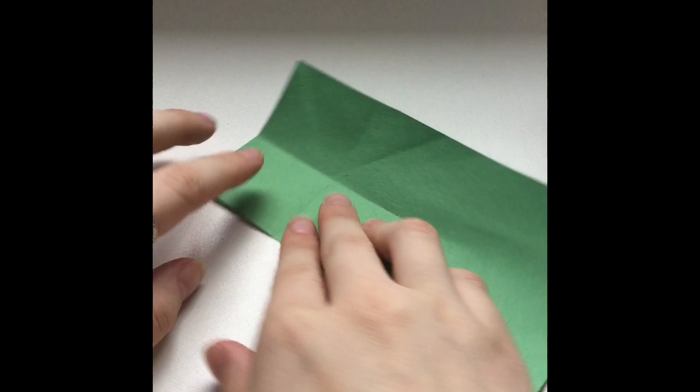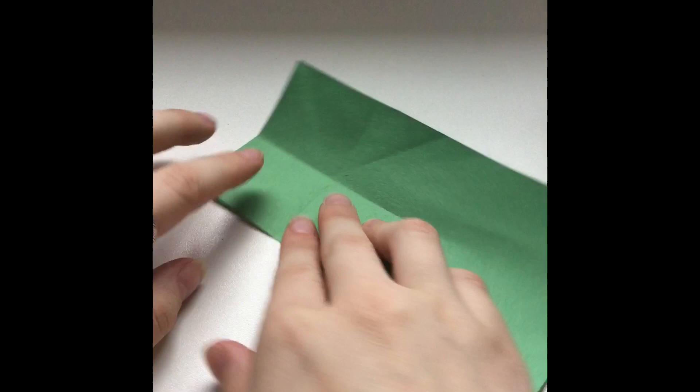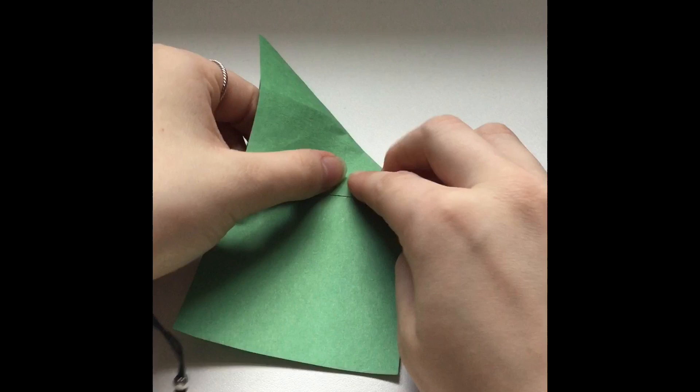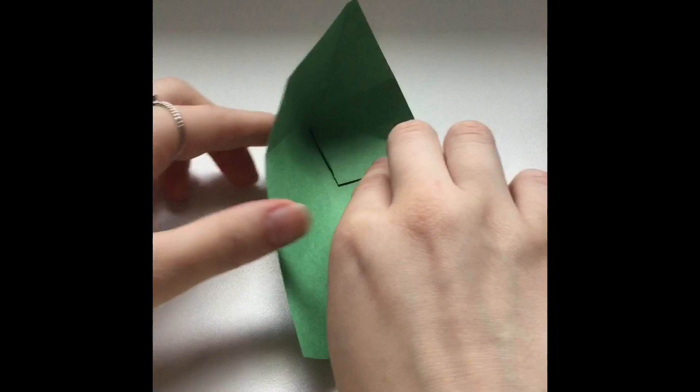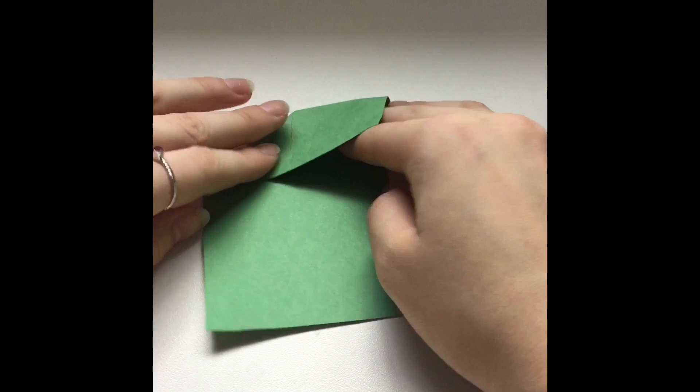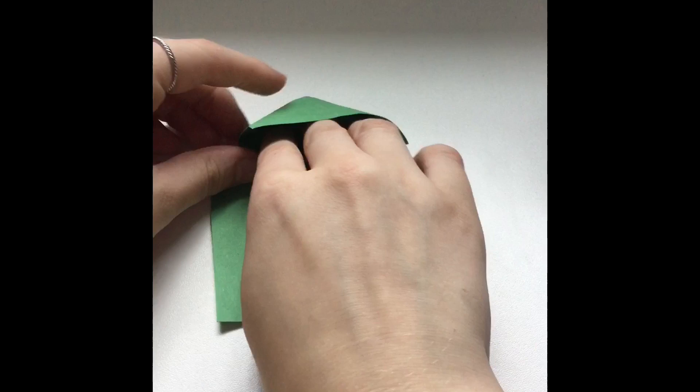So once you finish that you are going to hold your paper up like this with the fold upward. You are going to pull this corner down like we did before. You see this crease right here? Fold it back. So then it makes like a triangle shape. And then you are going to do the same exact thing on the other side. You push the corner down and then fold it again back over to form a triangle.